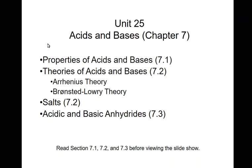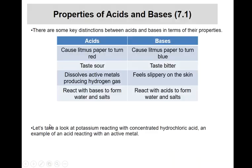We're going to look at a few things: properties of acids and bases, look at the theories of acids and bases, something we call salt, and then also talk about acidic and basic anhydrides. We look at properties of acids and bases. We summarize them in this little table right here. On the left hand side we have our acid column and the right hand side we have our base column.